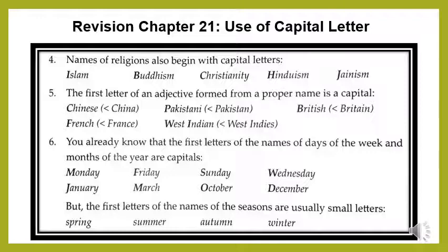Now come to the fifth use. The first letter of an adjective formed from a proper name is a capital. Those adjectives that are formed from a proper noun always start with a capital letter. For example, Chinese — it is an adjective formed from the proper noun China, so it starts with a capital letter. Pakistani is also an adjective formed from Pakistan, so it starts with a capital letter. Other examples: British (from Britain), French (from France), West Indian (from West Indies). This type of adjective always starts with a capital letter.